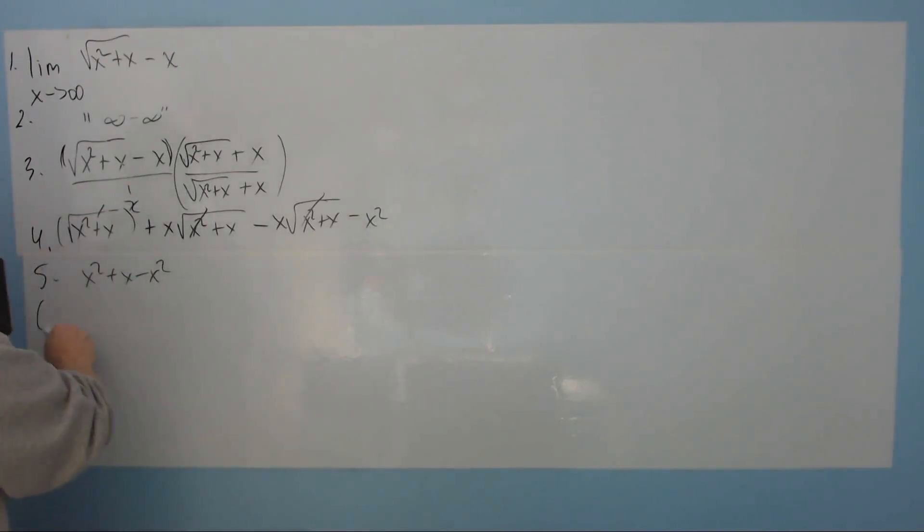So then when you do that, remember, this is just simplifying the top. You haven't even touched the bottom yet. So here then, this cancels with this and all that remains on the top is x. So that allows us to say that at step number 7, we have now x over square root of x squared plus x plus x.